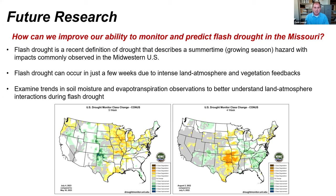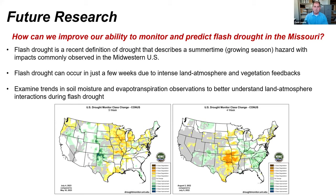I also want to look more into flash drought in the future. These maps show how flash drought-prone the Midwest and Missouri can be. From May 30th to July 4th, drought onset across Missouri and the upper Midwest was extremely rapid — some locations changed four classes in five weeks, qualifying as flash drought. The southern part of the state went through an almost identical situation with a multiple-class degradation in late summer last year as well. Missouri is clearly vulnerable to flash droughts, which occur quickly due to intense land-atmosphere and vegetation feedbacks.